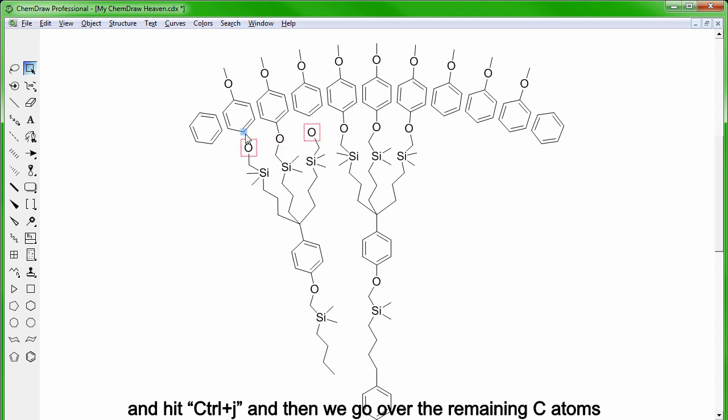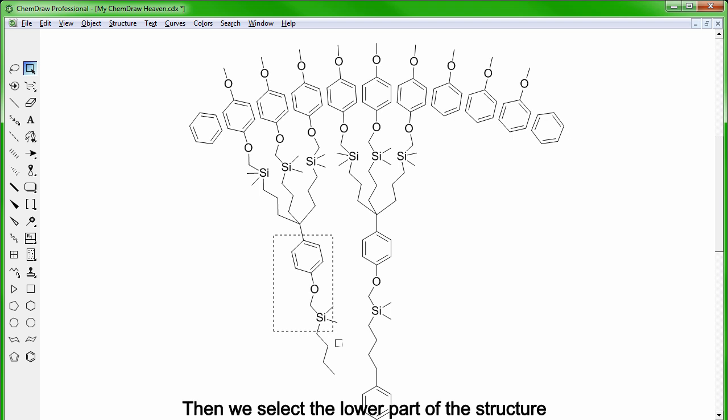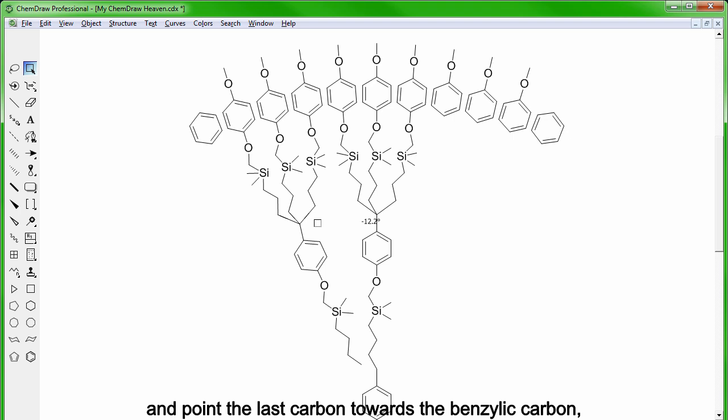Then we go over the remaining carbon atoms and press 0 to sprout bonds that will go directly onto the oxygen atoms since they're close by. Then we select the lower part of the structure and point the last carbon towards the benzylic carbon and we do the same thing on the other side.